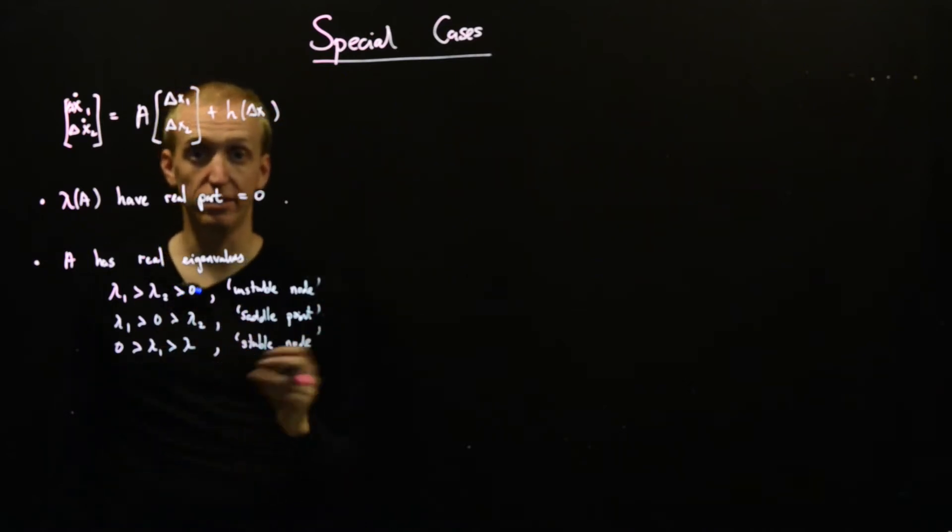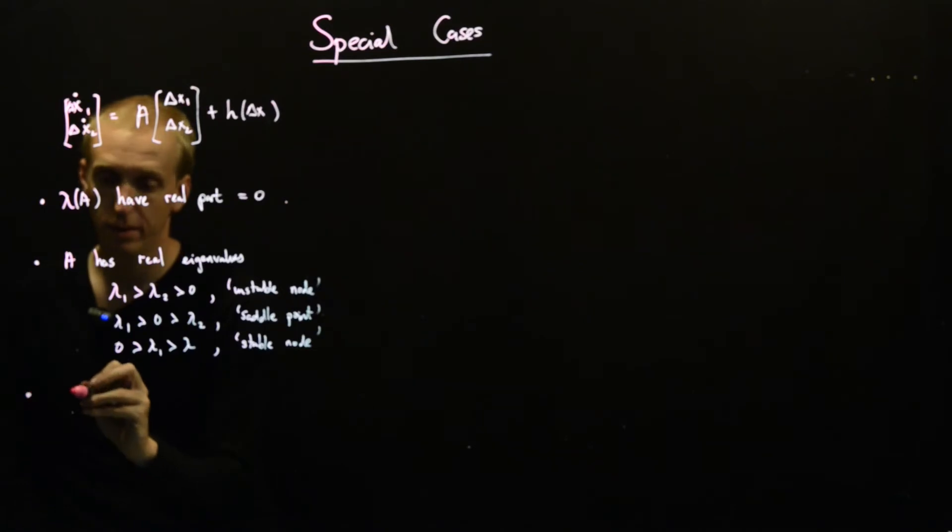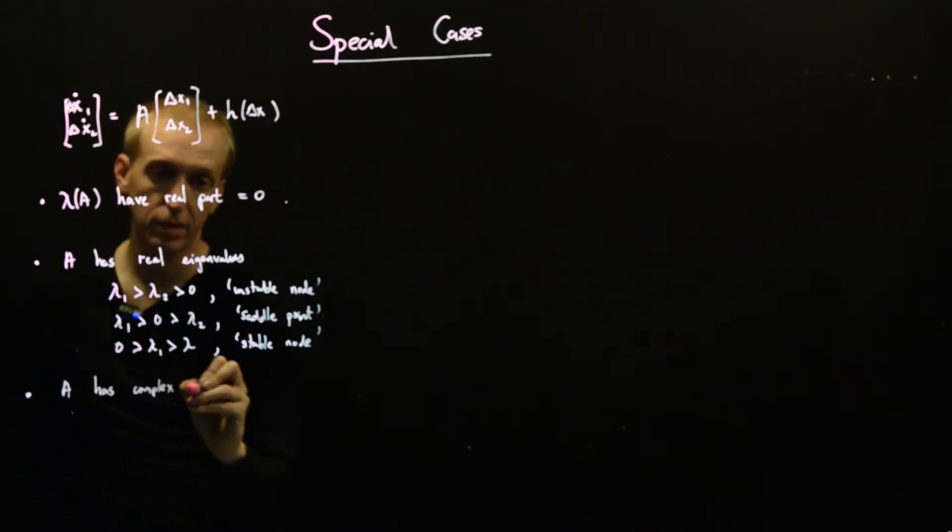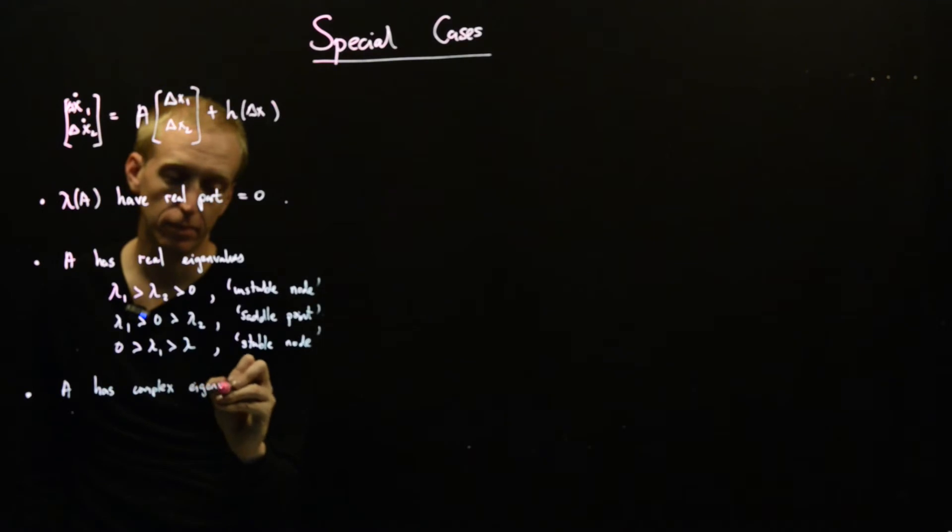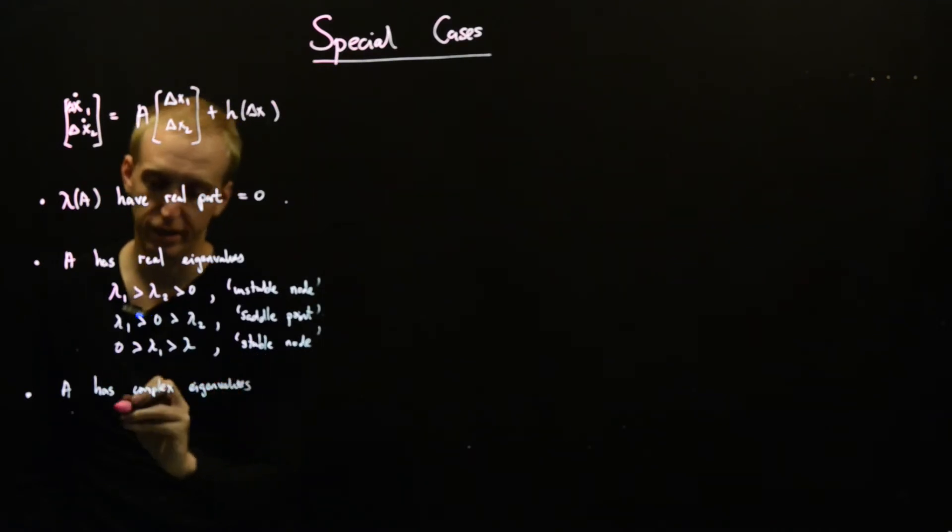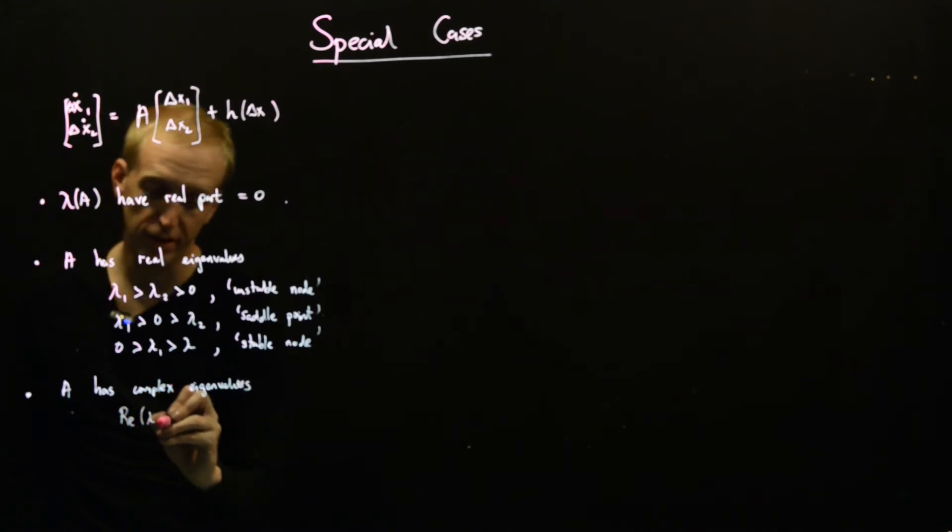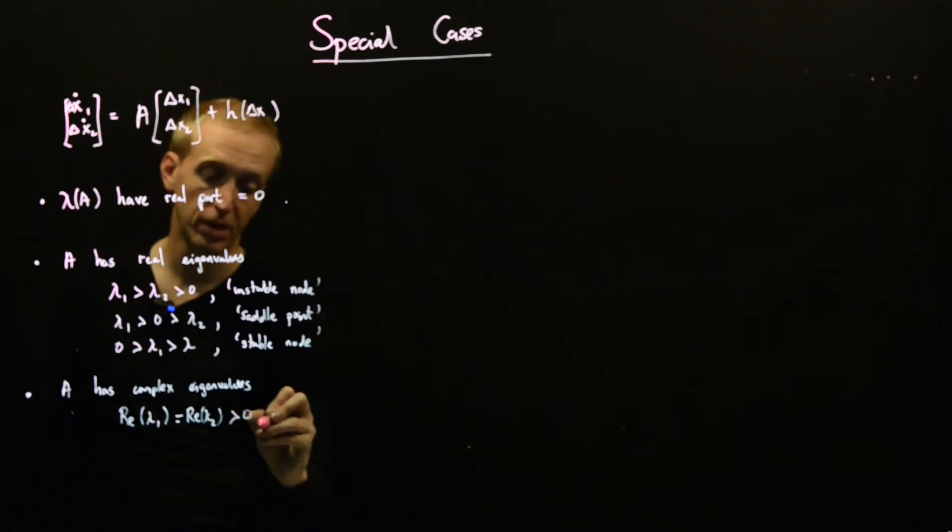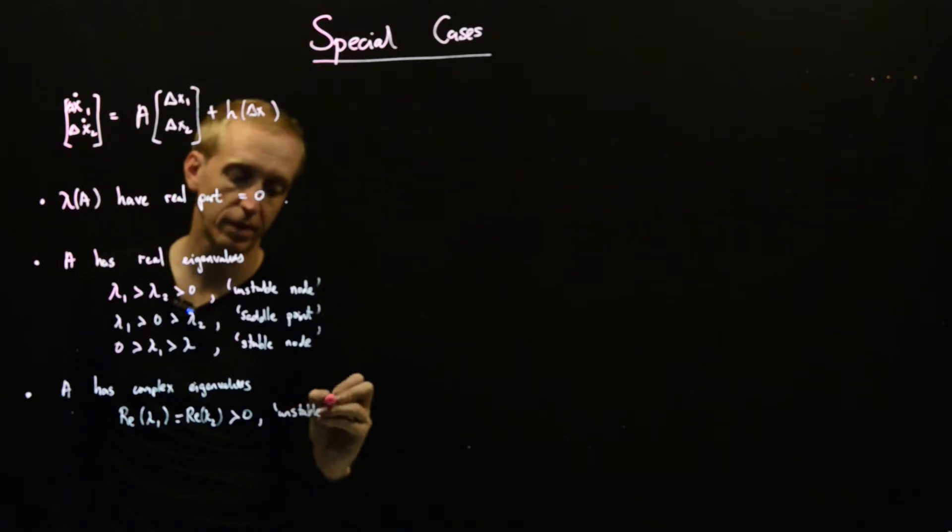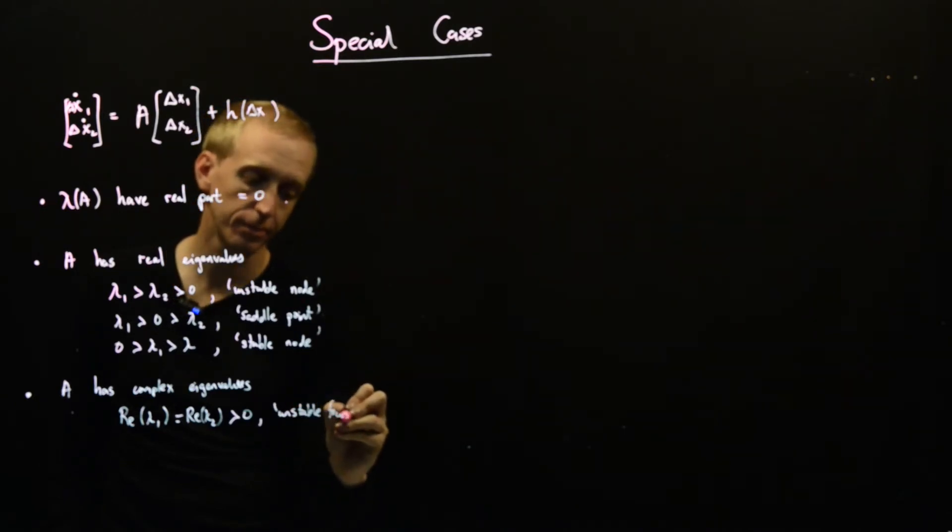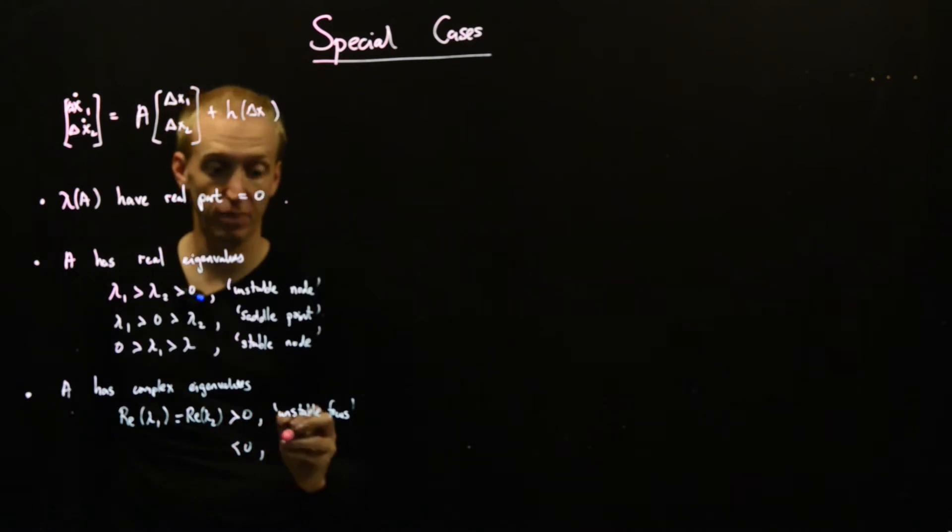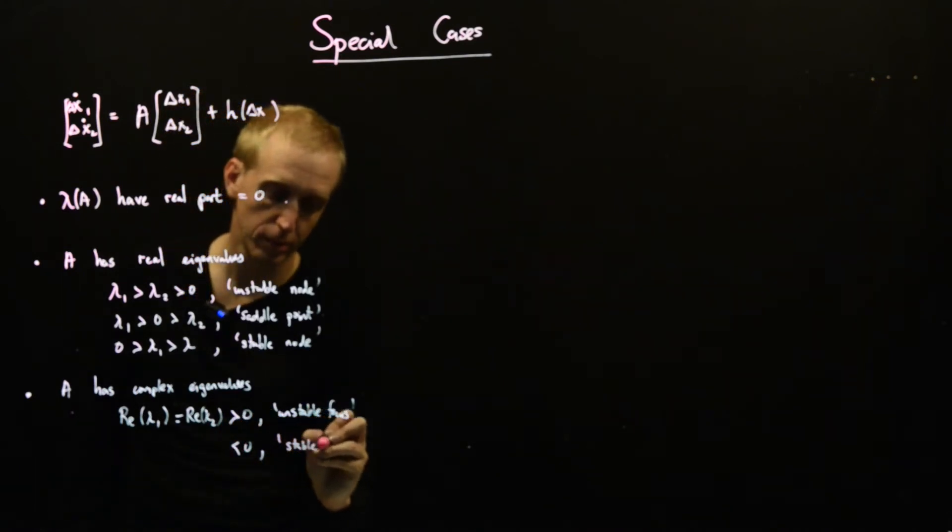And then we also classified the case of complex eigenvalues. So if A has complex eigenvalues, then if the real part of lambda 1, which must be equal to the real part of lambda 2, because they come in complex conjugate pairs, is bigger than 0, then we got an unstable focus. And then with this reversed, so that we have eigenvalues in the left half plane, we get a stable focus.